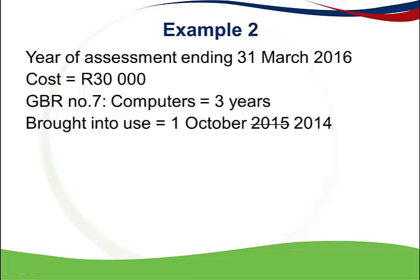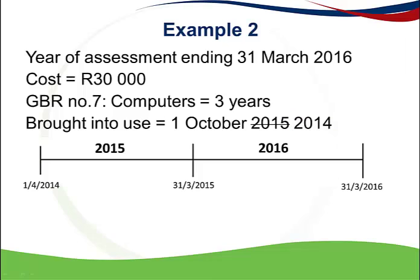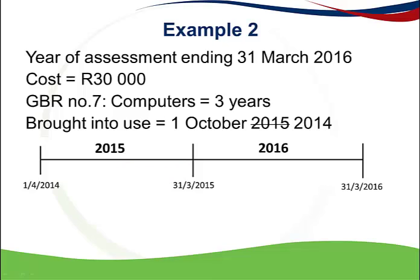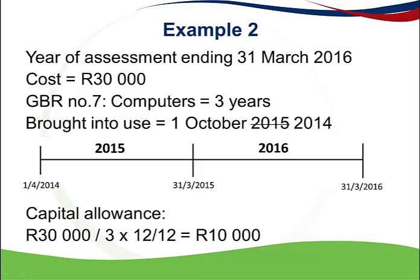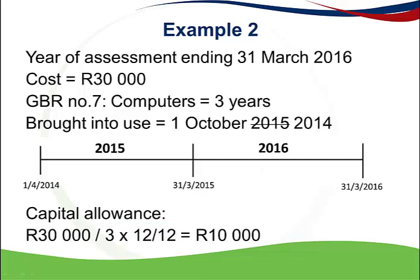In another example, the year end is the same but the asset was brought into use on 1 October 2014, which is in the previous year of assessment. Plotting this on the timeline, a portion would have been claimed in the 2015 year of assessment. For the 2016 year of assessment, the asset was used for a full 12 months, so no apportionment is needed. The capital allowance is 30,000 Rand divided by 3, giving 10,000 Rand for 2016.